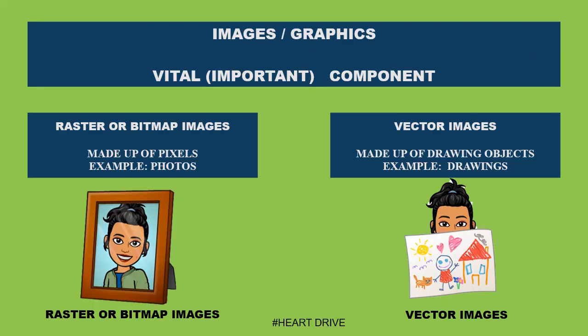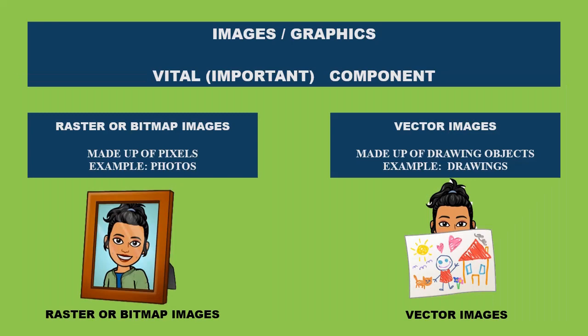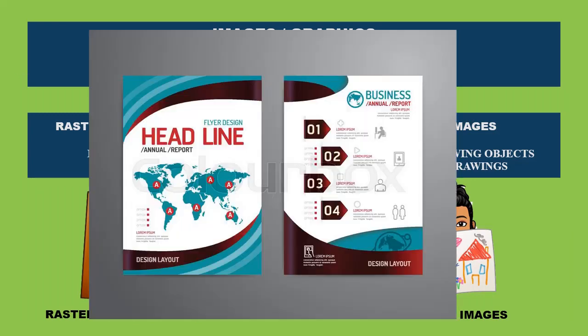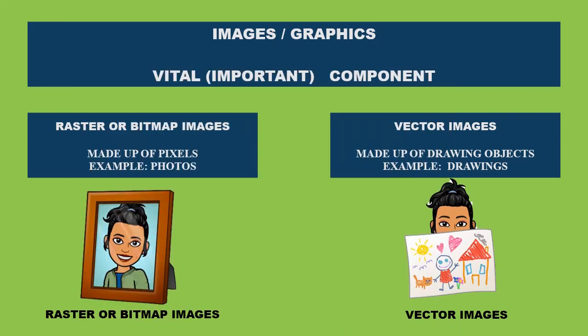Next, we are going to see about images. Images are an important component of multimedia as any information can be conveyed easily using pictures or images. Images are of two types. One is raster or bitmap images — a bitmap image is made up of pixels. Every picture and photo we see is a bitmap image, made up of tiny dots called pixels. Based on the number of pixels, image clarity and resolution are determined. The second type is vector images, which are drawing objects used in magazines and most publishing media, as they are easy to compress and the quality remains the same even upon compression.